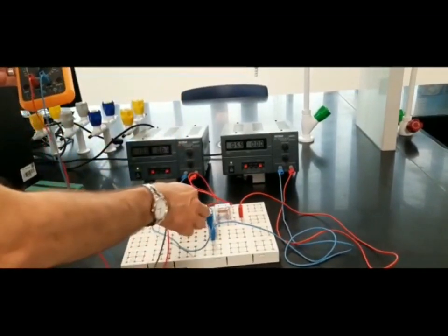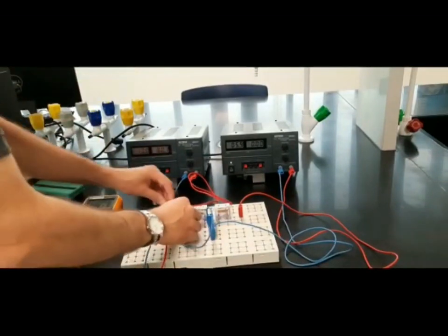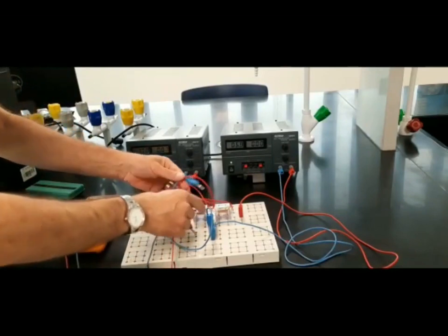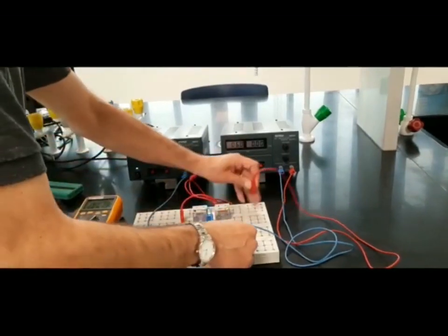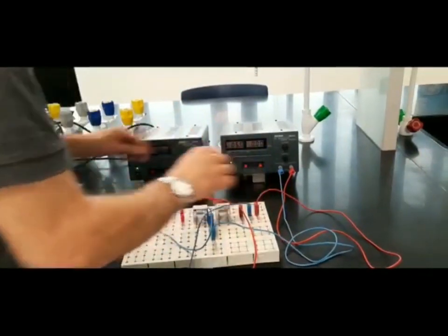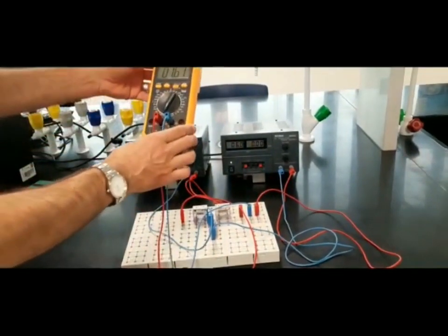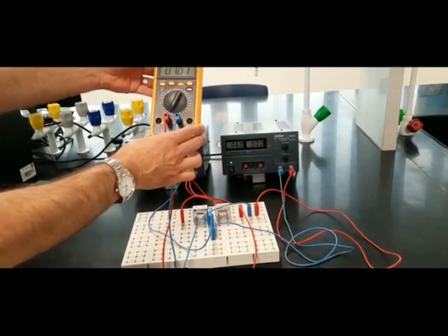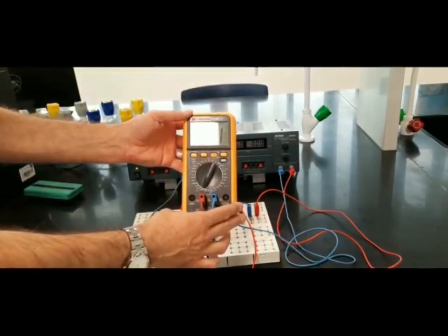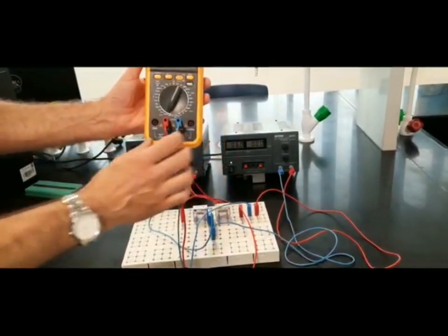Now I will measure the current in the resistance R2. It says 1.61 milliamperes, and the positive terminal is connected to the left.